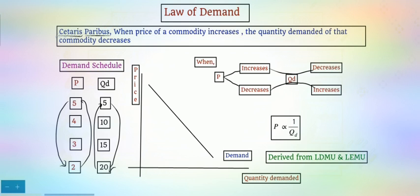Here we use the term 'ceteris paribus,' which means keeping other things constant, or keeping other things the same. Demand is influenced by other factors too. The law of demand states that when price increases the quantity demanded decreases, but this holds only while keeping other things — like income of the consumer and taste and preference — unchanged. When price alone changes, the consumer follows the law of demand.